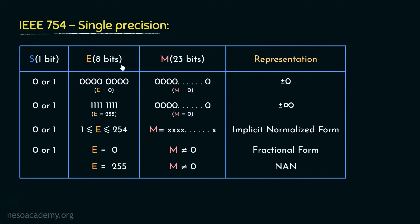If the 8 bits of the biased exponent have all ones, that is the exponent represents the value 255 in decimal, and the 23-bit mantissa has all zeros, then if the sign bit is 0 the pattern represents positive infinity, and if the sign bit is 1 it represents negative infinity. Apart from the exponent values 0 and 255, if the exponent ranges from 1 to 254, whatever we have in the 23-bit mantissa will represent the implicit normalized form.